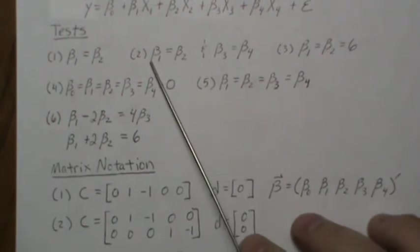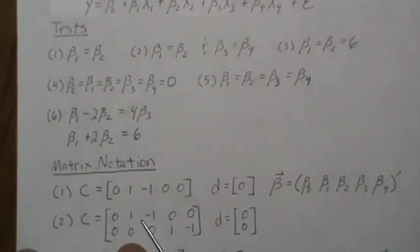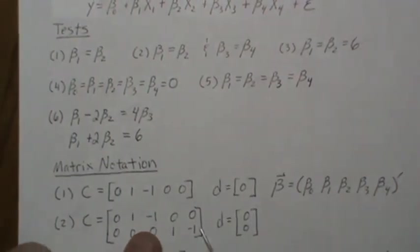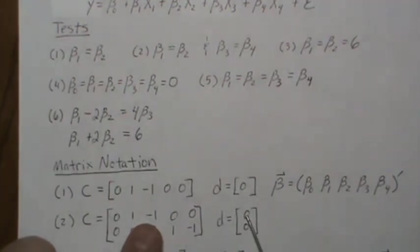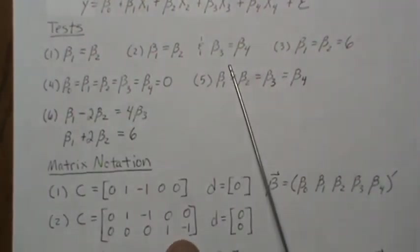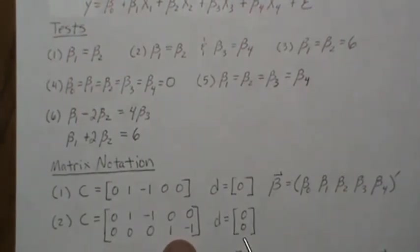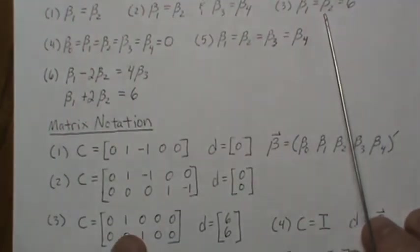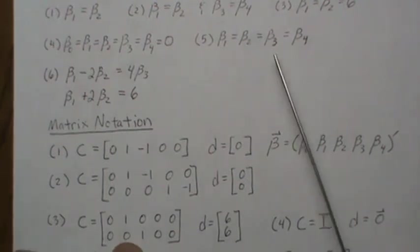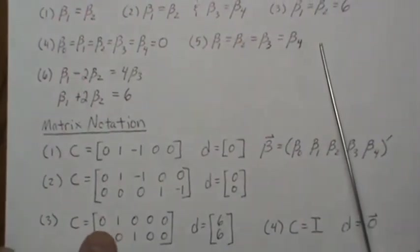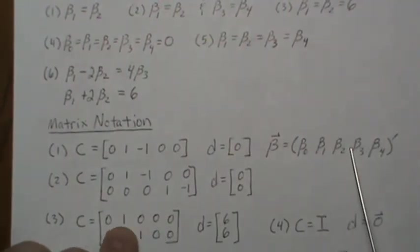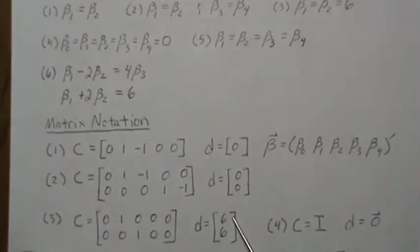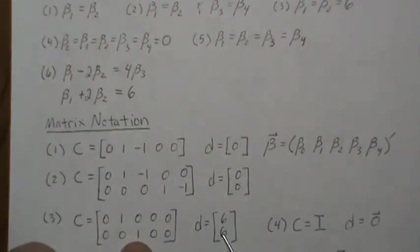For Test 2 we need two constraints. The first row isolates beta_1 and beta_2 and checks if their difference is zero. The second row isolates beta_3 and beta_4 and checks if their difference is zero. For Test 3, the first row of C isolates beta_1 and D is 6 — is beta_1 equal to 6? — and similarly the second row isolates beta_2 and checks if it equals 6.